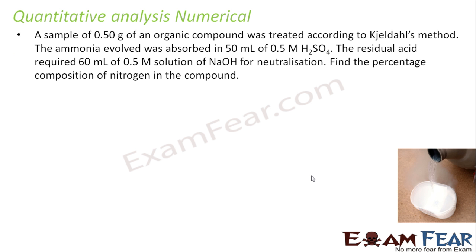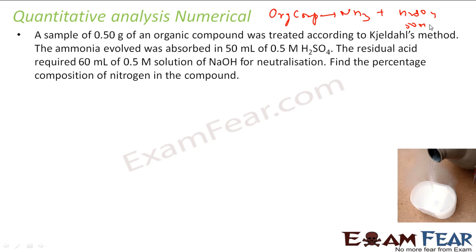Let's take one more example. A sample of 0.5 grams of an organic compound was treated according to Kjeldahl's method. Ammonia was liberated and absorbed in 50 mL of 0.5M H₂SO₄. Some acid was left over, and this remaining acid required 60 mL of 0.5M NaOH for neutralization. We have to find the percentage composition of nitrogen.